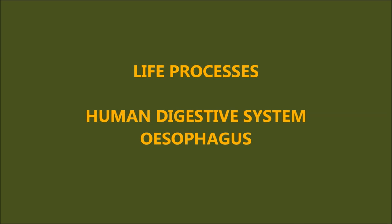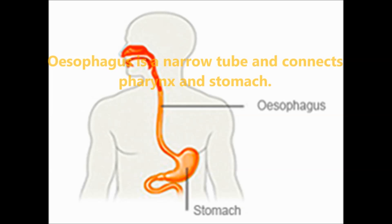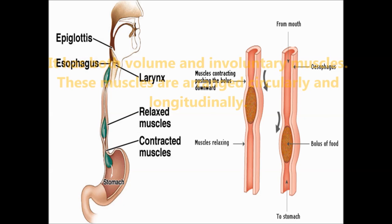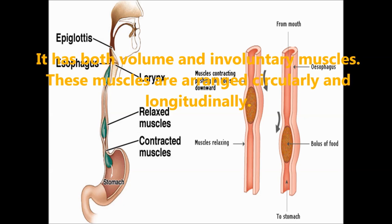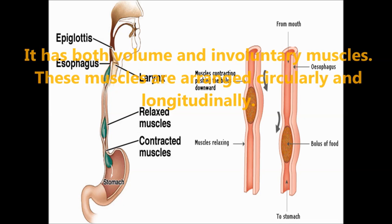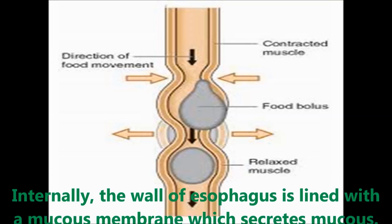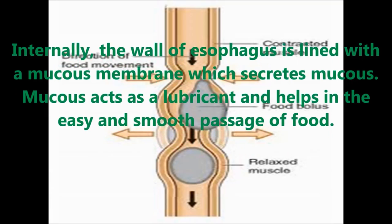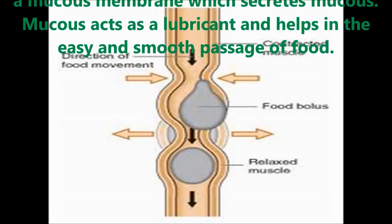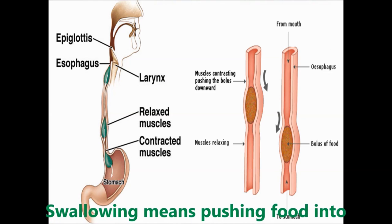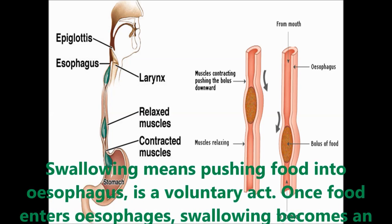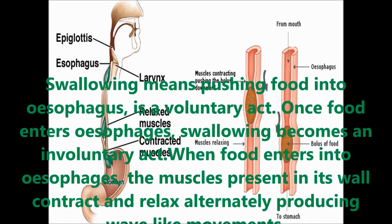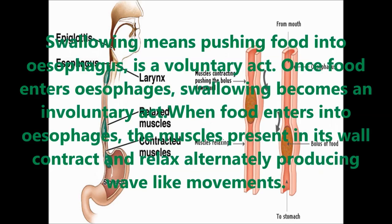The function and movements of the esophagus. Esophagus is a narrow tube that connects the pharynx and stomach. It has both voluntary and involuntary muscles arranged circularly and longitudinally. The internal wall of the esophagus is lined with a mucous membrane which secretes mucus. Mucus acts as a lubricant and helps in the easy and smooth passage of food. Swallowing — pushing food into the esophagus — is an act of voluntary muscle, but once food enters the esophagus, swallowing becomes an involuntary act.